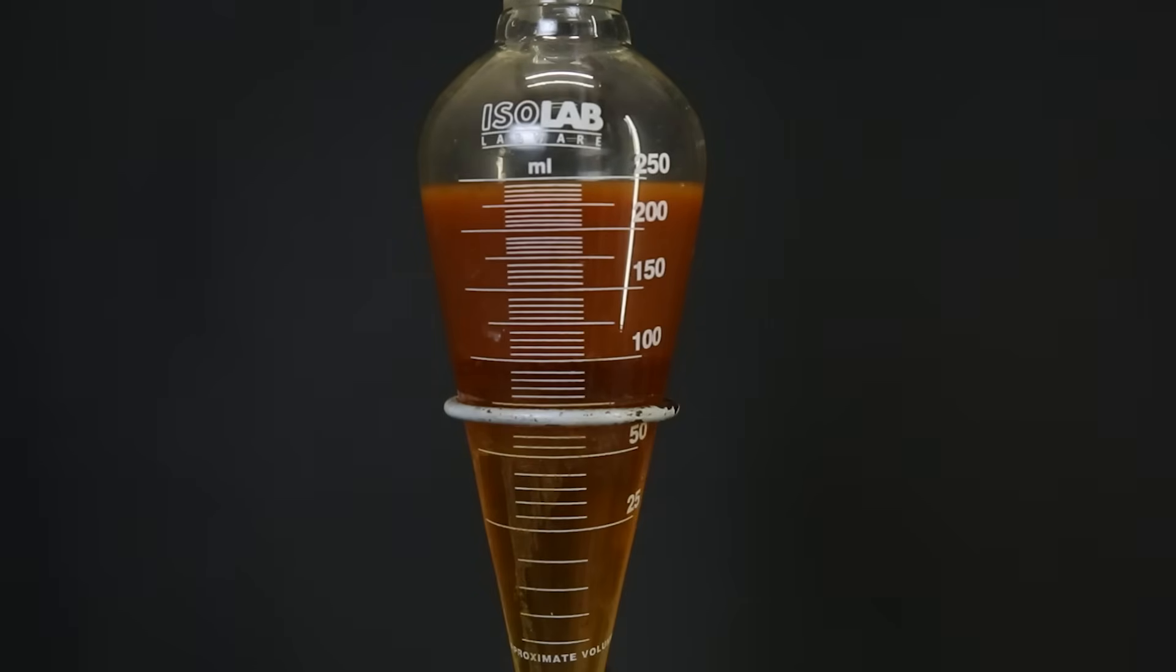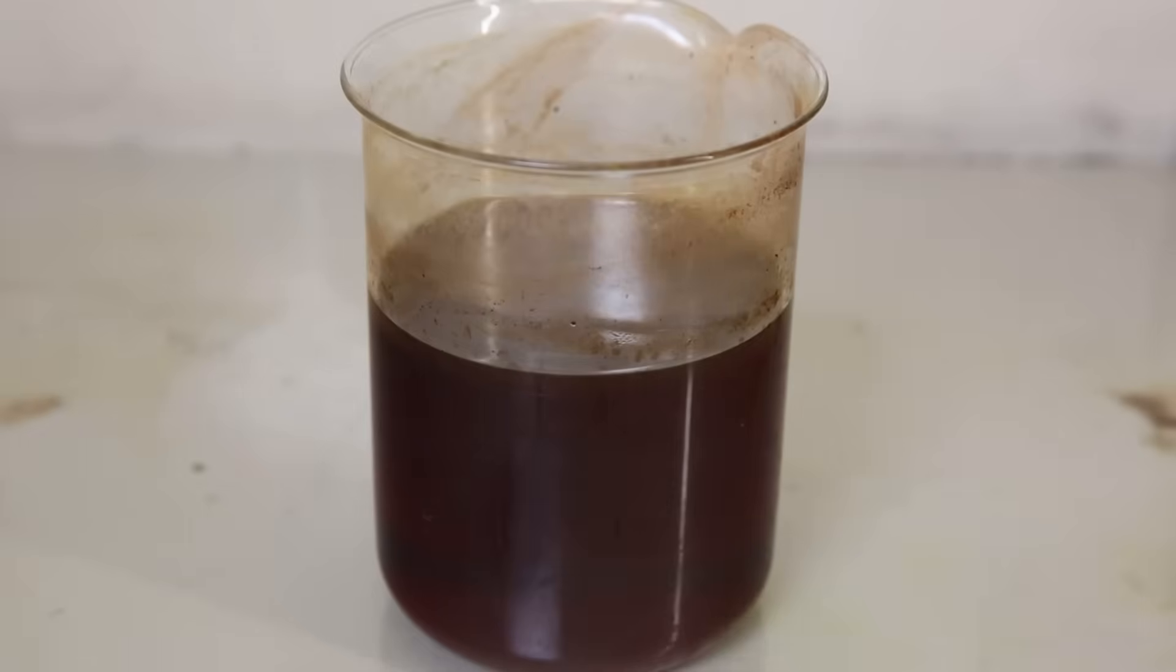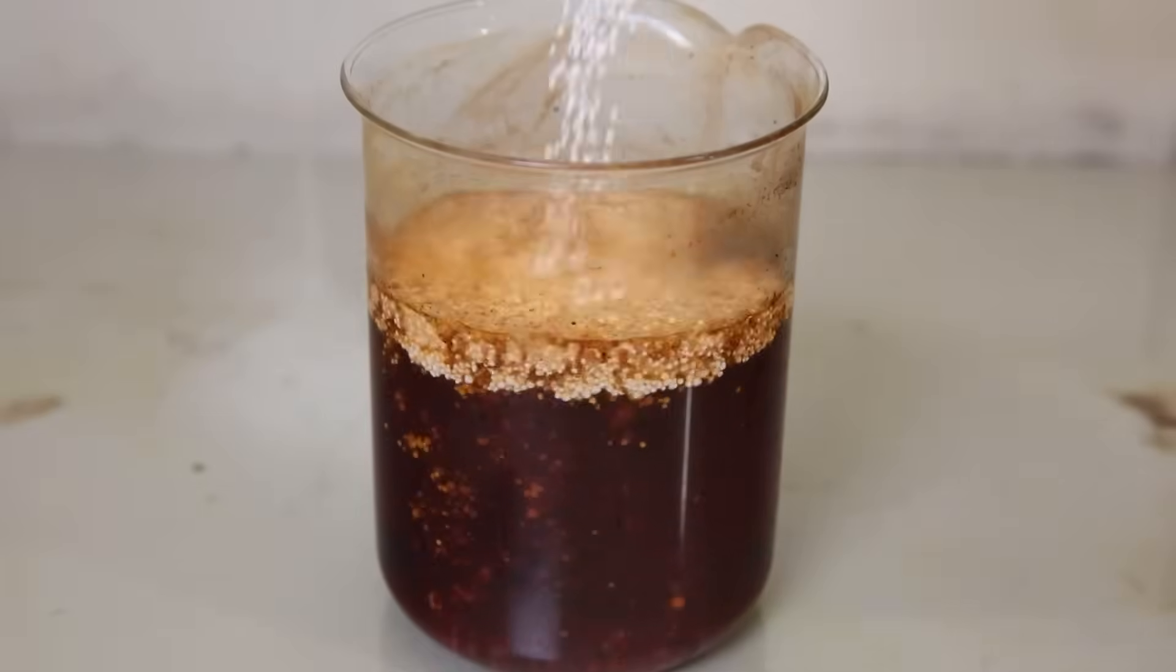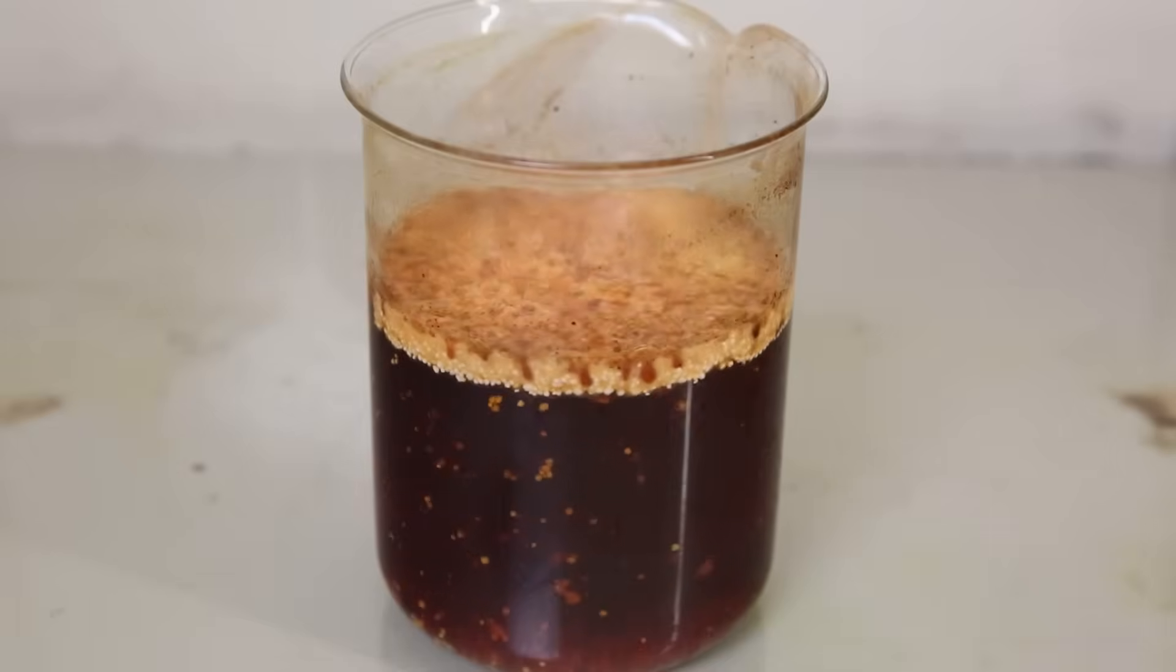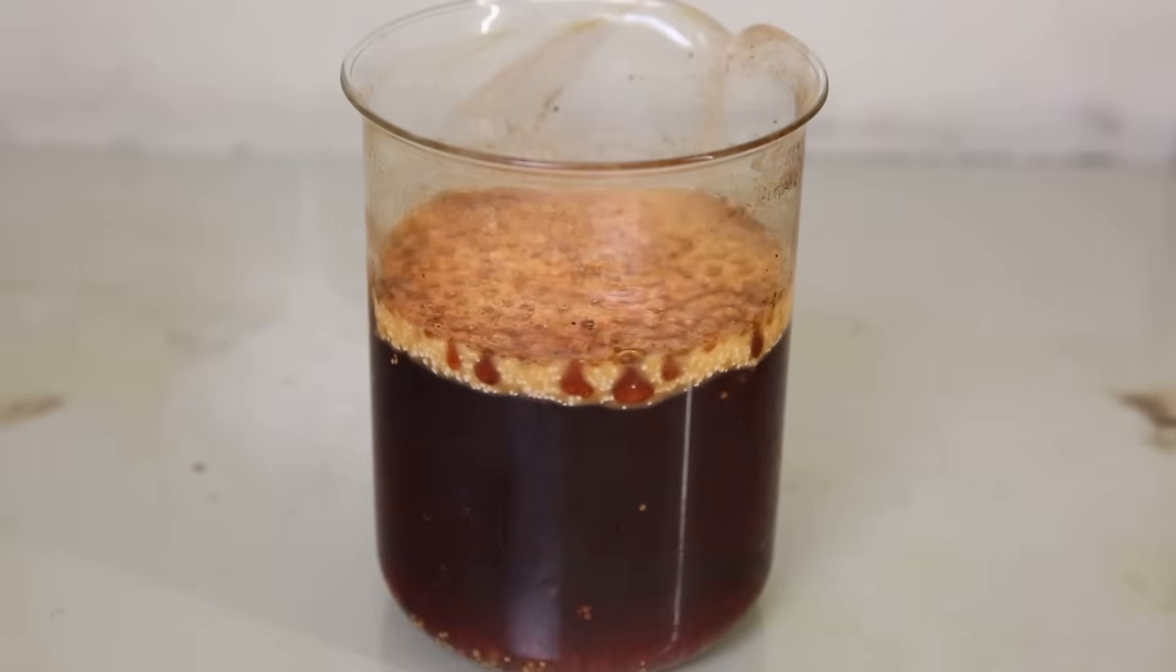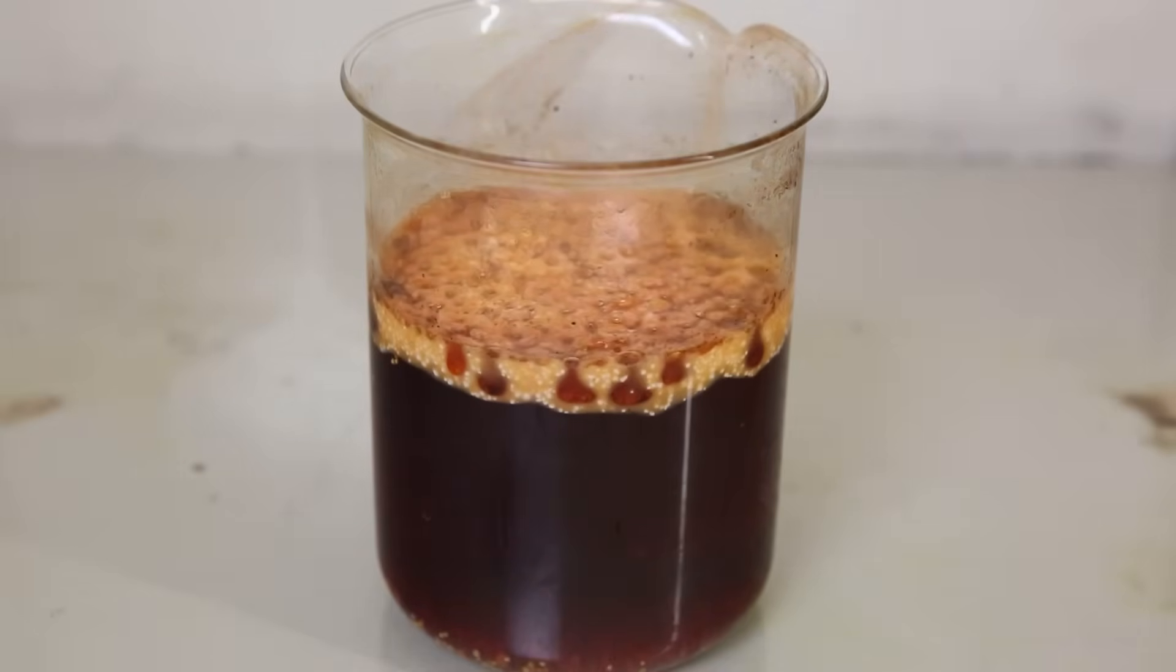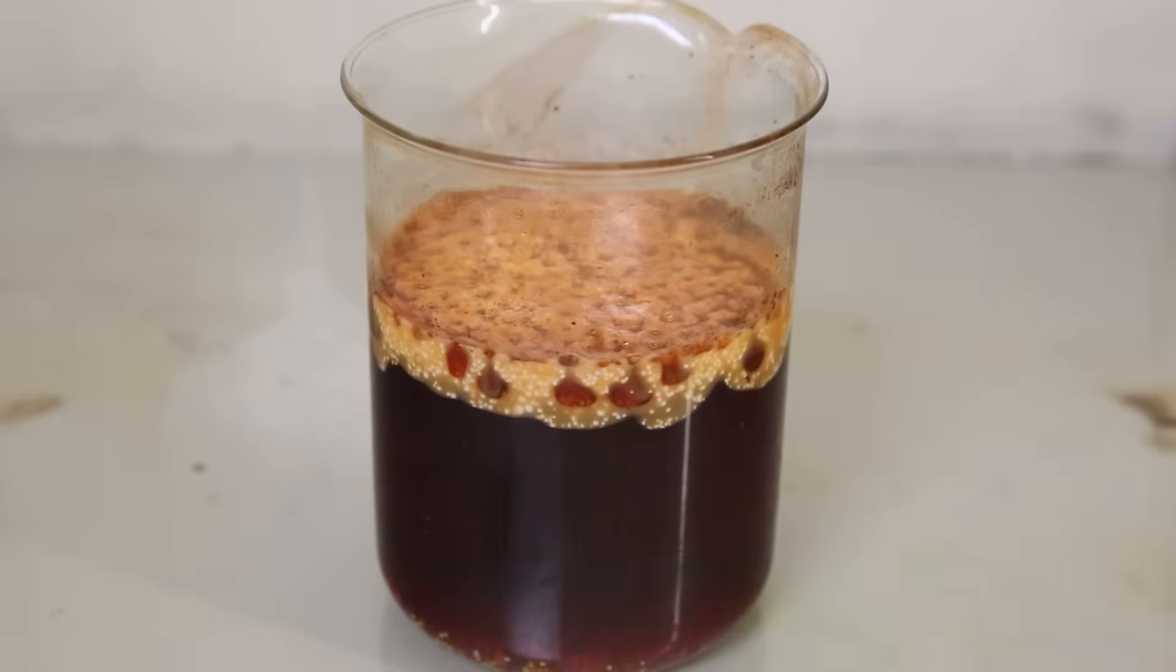So I combined all of the DCM from the first and second extraction, which should contain most of the products. So to remove part of the water from this mixture, I simply add a bunch of calcium chloride. It bubbles a little because the hydration of calcium chloride is exothermic. And there are some basic impurities in the calcium chloride, which reacts with any acid that is present in the mixture.